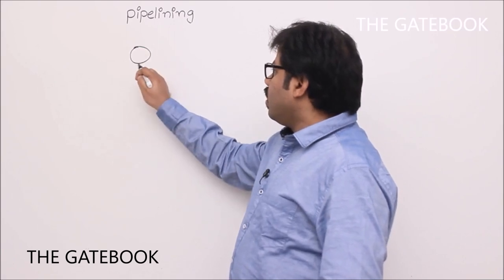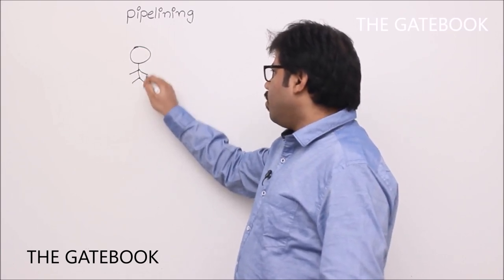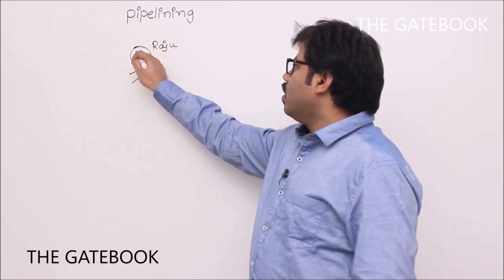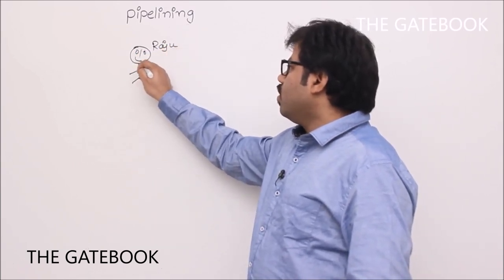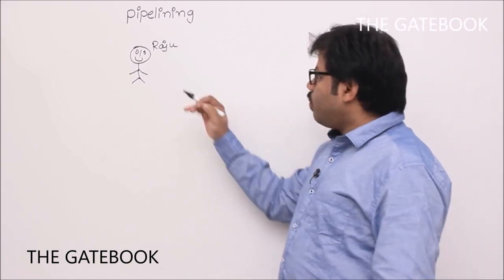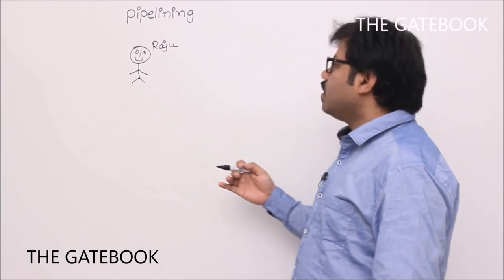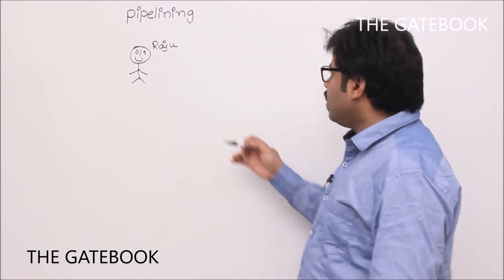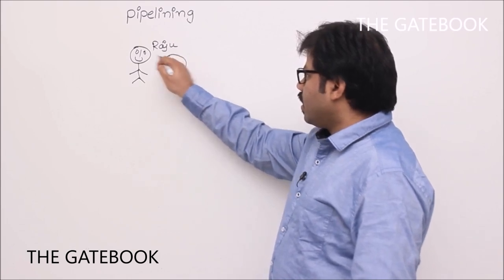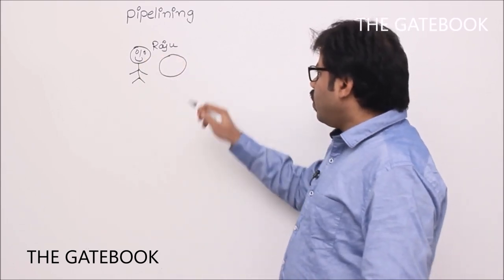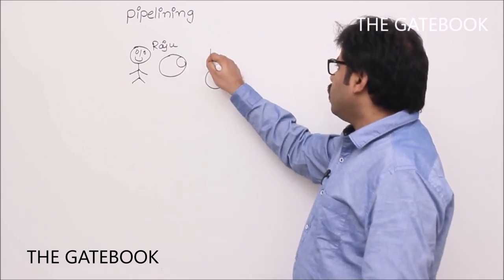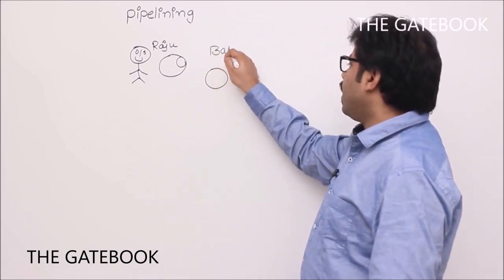Let's say you have one employee, let's call him Raju. You have a hotel and he is an employee. Raju is going to make rotis — he is a roti specialist. When you observe Raju's functionality, what he does to make a roti is: first, from the dough he takes some portion and makes a ball. This is the first step — making a ball.